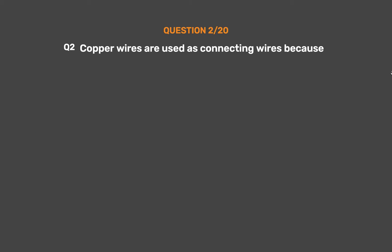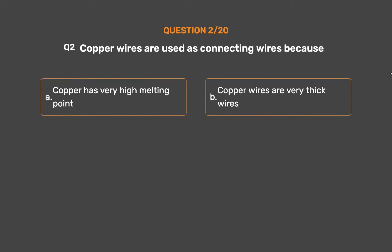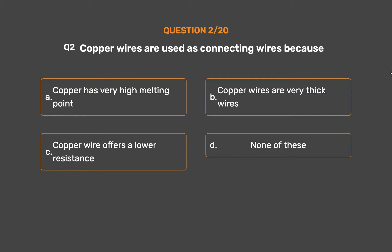Question number 2. Copper wires are used as connecting wires because: Option A: Copper has a very high melting point. Option B: Copper wires are very thick wires. Option C: Copper wire offers a lower resistance. Option D: None of these.